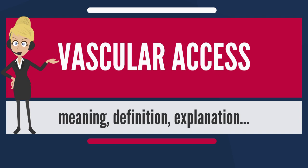If a fistula has a very high blood flow and the vasculature that supplies the rest of the limb is poor, steal syndrome can occur, where blood entering the limb is drawn into the fistula and returned to the general circulation without entering the limb's capillaries. This results in cold extremities of that limb, cramping pains, and, if severe, tissue damage.